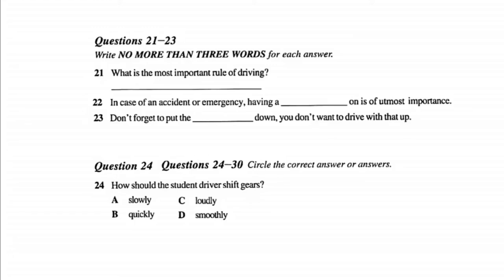First, you should put on your seatbelt. You should always remember to do that. In case of an accident or emergency, having a seatbelt on is of utmost importance. Okay. I have my seatbelt on. Now what should I do? Start the car. Good. Now make sure that the steering wheel is in the proper position and that your seat is not too far or not too close to the pedals.